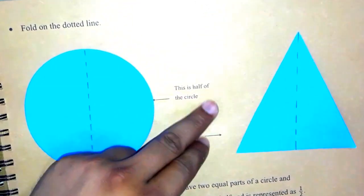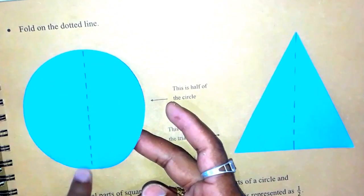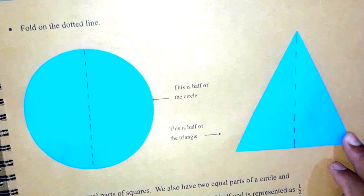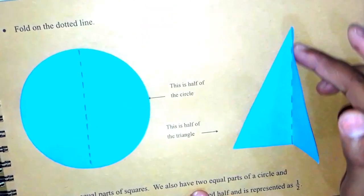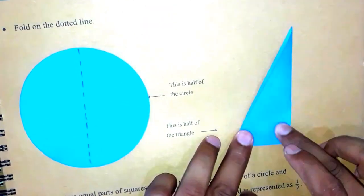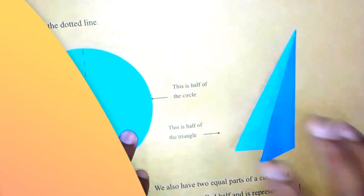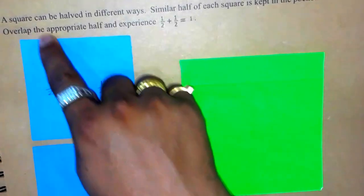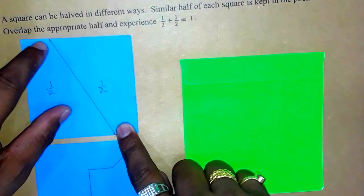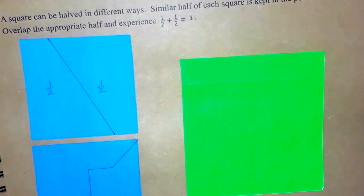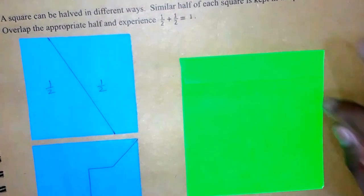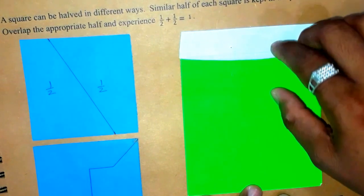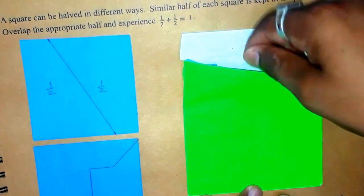One part out of these two equal parts is called half and is represented as one by two. Now this is half of the circle — if you fold it from the dotted line, you will get exactly half of the circle. Now let's move on to the triangle. If we fold on the dotted line, you will see exactly half of the triangle. Now a square can be halved in different ways. This is the first way and this is another way we can half the square. Similar half of each square is kept in the pocket.